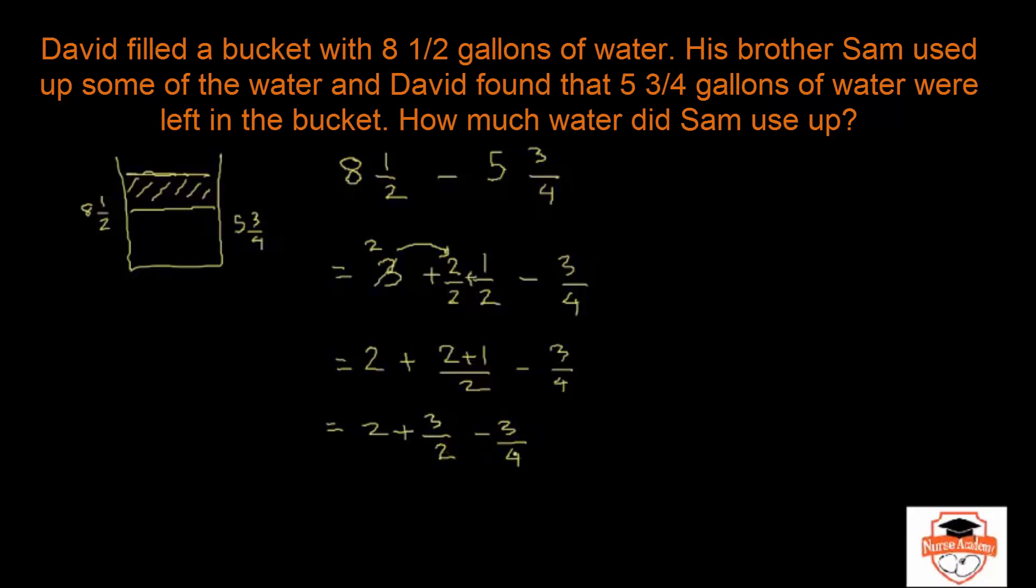The LCM of 2 and 4 is 4. So you want to multiply 2 with 2 and do the same with this 3 on the top. The rest is a piece of cake.